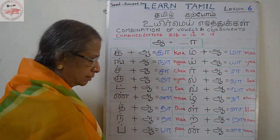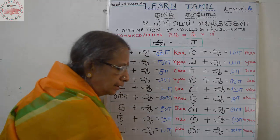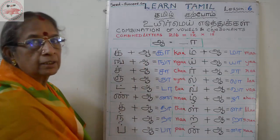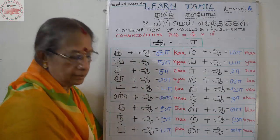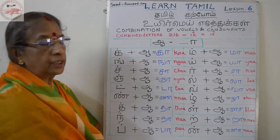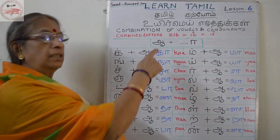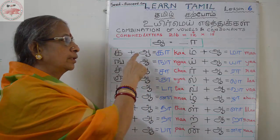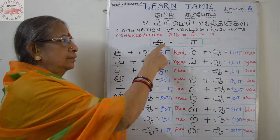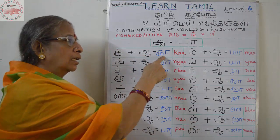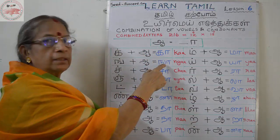Now we get the first sound. The difference is: Ka, Nga, Nga. Now we see: A, vaval, A. Ka, Nga. That is the difference.